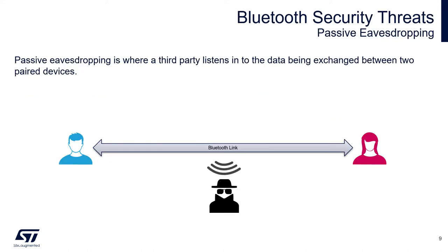Let's now look at the possible threats that can occur in Bluetooth Low Energy. The simplest type of attack is passive eavesdropping, where the attacker simply listens on the communication channels and can capture all the data exchanged between the two parties. If the BLE link is non-encrypted, the attacker has an easy job.